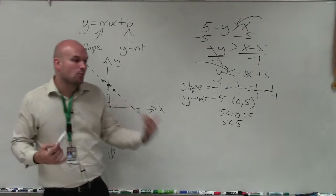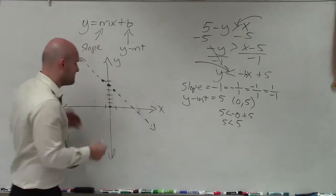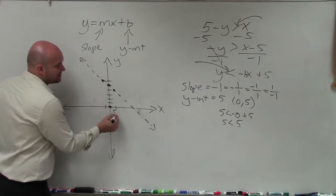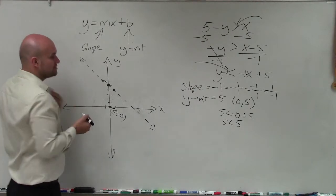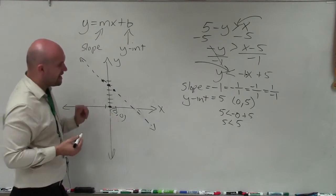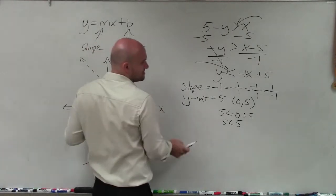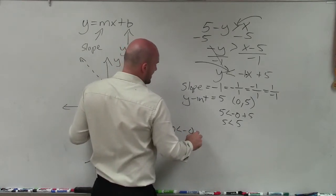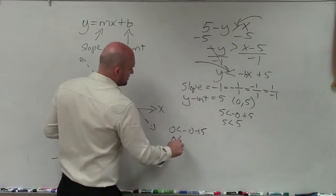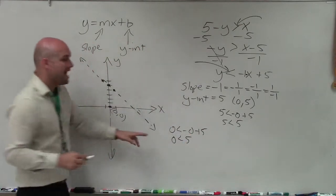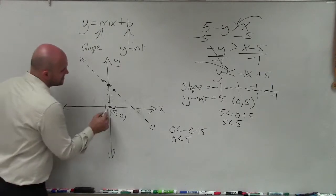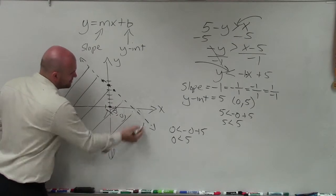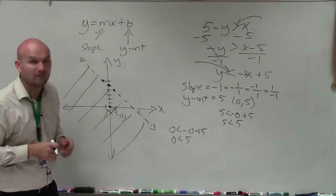However, we want to determine, what about the points above and below the line? Are those true or false? So to do that, we need to test for a point that's not on the line. And the best point to test is 0 comma 0. So to do that, all I'm simply going to do, just like how I tested my y-intercept, is I'll plug 0 in for y, and 0 in for x plus 5. And what I get is 0 is less than 5. And that is true. So since the point below my line is true, that means all the other points below my line will be true, and all the points above my line will be false.